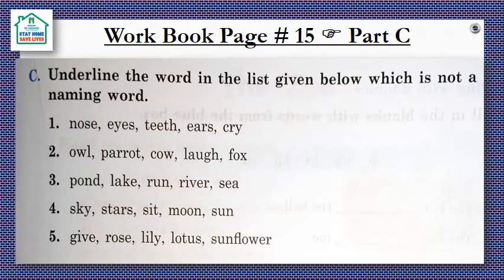Number four: sky, stars, moon, sun — these four are naming words. The one different word is sit. Sit is an action word, so we will underline sit.